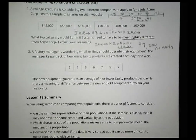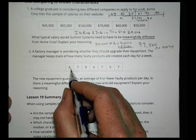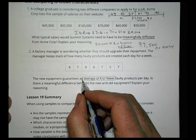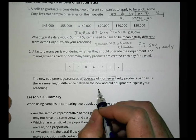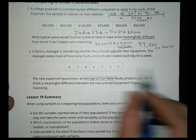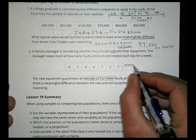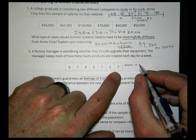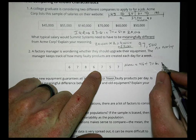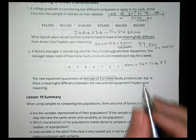Problem 2: A factory worker wants to upgrade equipment. The manager tracks faulty products per day. New equipment guarantees an average of 4 or fewer faulty products — is there a meaningful difference? For this I'll use the mean and mean absolute deviation. Adding all the values gives 46; divided by 7 items, the mean is 6.57.